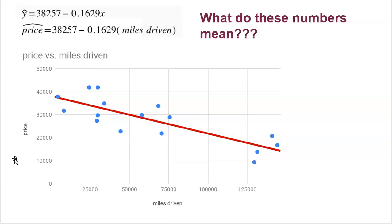What do these numbers mean? What is the 38,257 — where did that come from, what does it represent? And 0.1629 — what is that? First, we have to know which one is the slope and which one is the y-intercept, because that's sometimes half the battle.